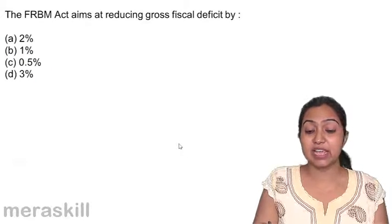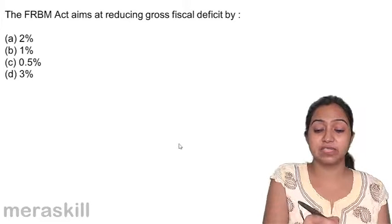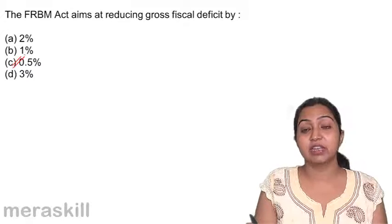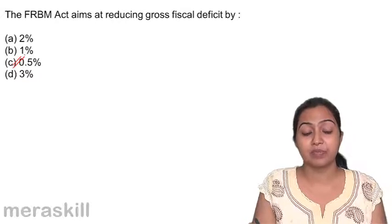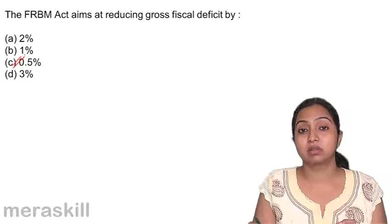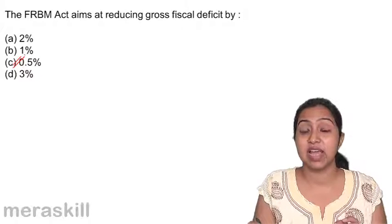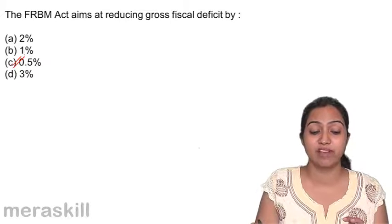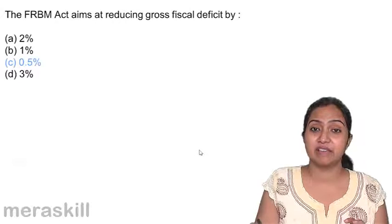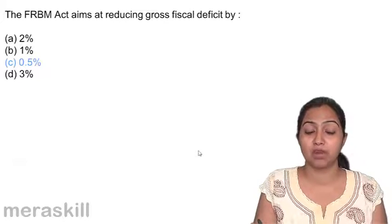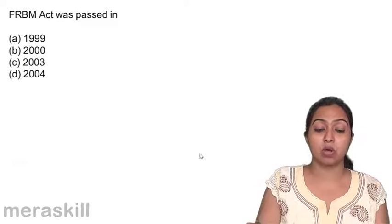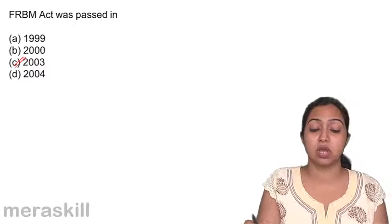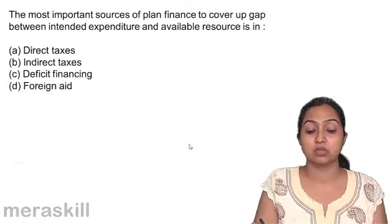The FRBM Act aims at reducing gross fiscal deficit by 0.5% of GDP. Because of that, when it was introduced in 2003, the fiscal deficit came down to its lowest in 2007 and 2008 — it was 2.5% — because every year they tried to reduce it by 0.5%. The FRBM bill was introduced in 2000 and the Act was passed in 2003.